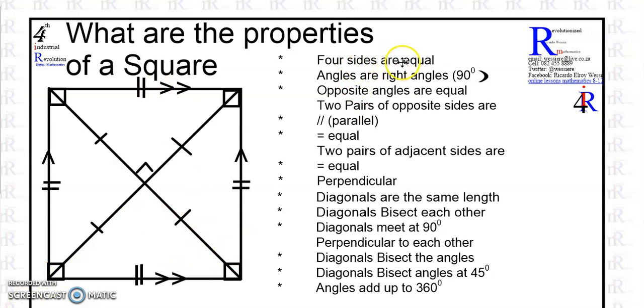So four sides that are equal. The angles are right angles, meaning 90 degrees. The opposite angles are equal, meaning that angle and this angle are equal, this one and that one are equal. Later on you will see why this becomes important.